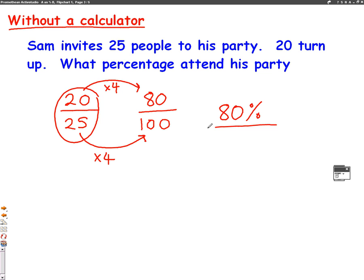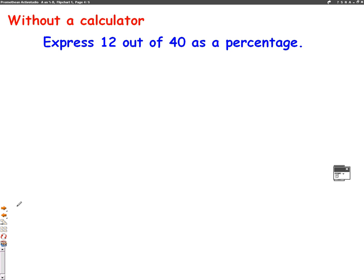But we're going to have a go at a third example now, a slightly more tricky one. So again, this question is without a calculator. So the question says, express 12 out of 40 as a percentage. So without a calculator, our method is to first write it as a fraction. So let's write 12 out of 40 as a fraction.